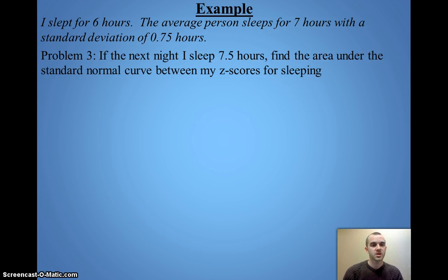Now, if I had a between problem, where I'm saying I slept for 7.5 hours, and I'll find the area between the two z-scores. The 6 hours, and then the 7.5 hours. So, I know my 6. That was a negative 1.33. If I did 7.5, I get about two-thirds for my z-score.